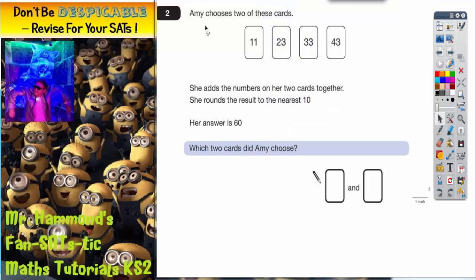Question 2: Amy chooses two of these cards - 11, 23, 33, and 43. She adds the numbers on her two cards together, she rounds the result to the nearest 10. Her answer is 60. Which two cards did she choose?